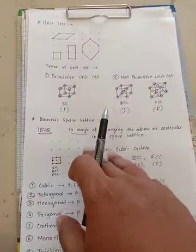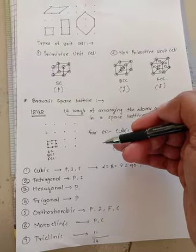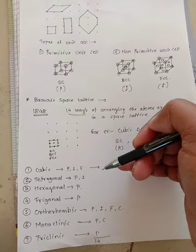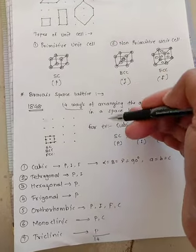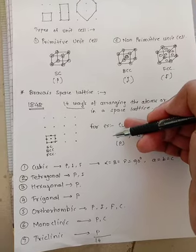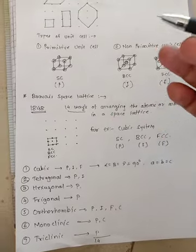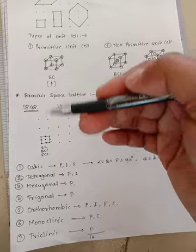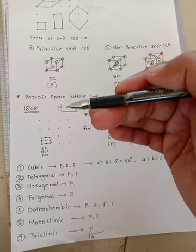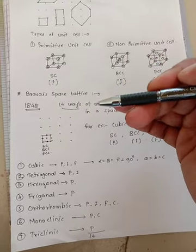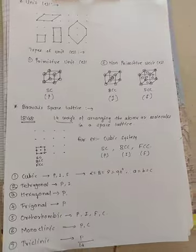Friends, the first lecture is over. In the second lecture, we will discuss the properties of the unit cell, that is coordination number, number of atoms per unit cell, atomic radius, and packing density. Thank you.